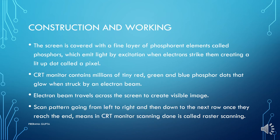The screen is covered with a fine layer of phosphorescent elements called phosphors, which emit light by excitation when electrons strike them, creating a lit-up dot called a pixel. Whenever the electron beam touches the screen, a small dot — a pixel — is created. The electron comes from the gun, the cathode throws it, the anode concentrates and accelerates it, the magnetic field guides it, and when it falls on the phosphorescent layer, a tiny dot — the pixel — is created. CRT monitors contain millions of tiny red, green, and blue phosphor dots that glow when struck by the electron beam.